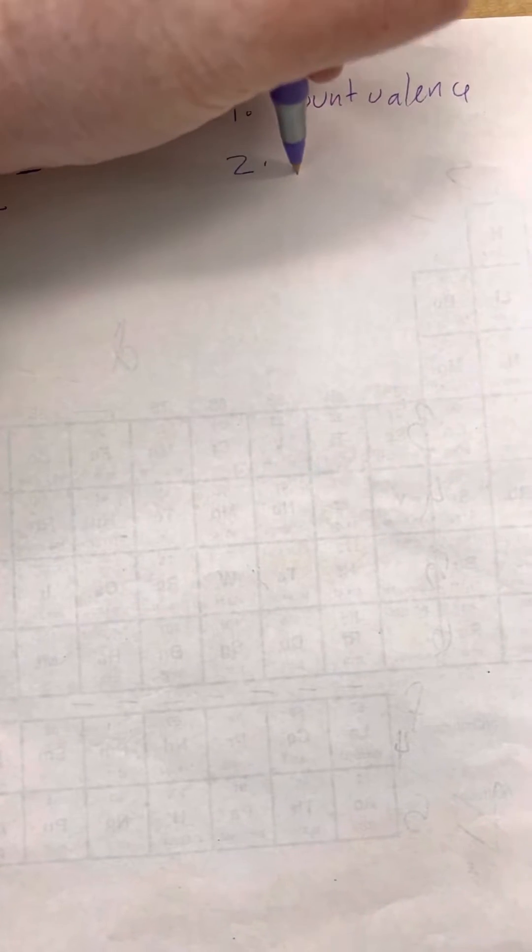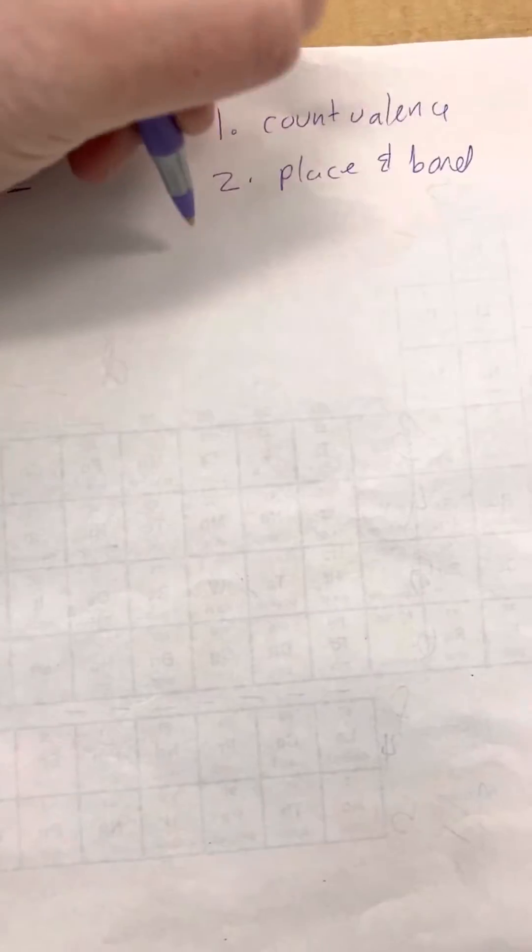Step two, we place everything together. Step three, we give octets. And step four, we count again.